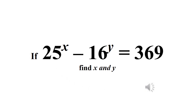Good afternoon guys, welcome to another Mathematics Olympiad class. Today we continue with the last question we used as a take-home. The question states: if 25 raised to power x minus 16 raised to power y equals 369, find the value of x and y.